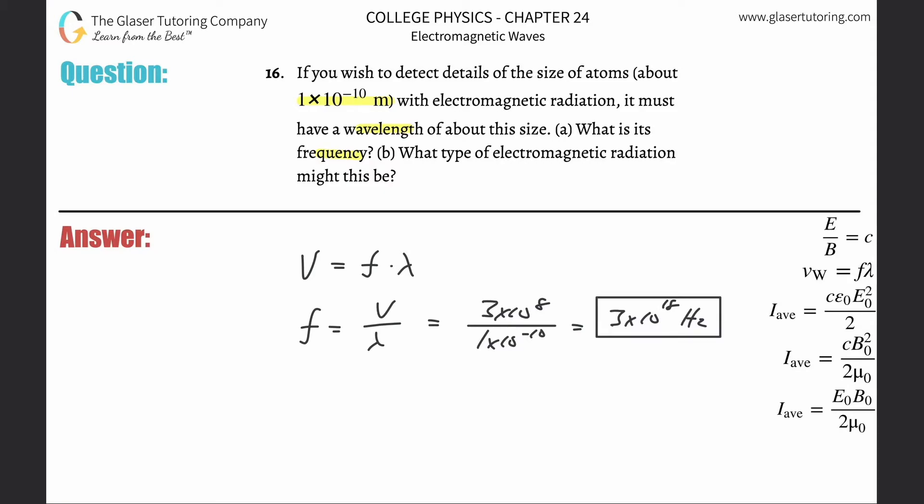Letter B is asking what type of electromagnetic radiation is this. You just have to look that up on a table on your electromagnetic spectrum, and that will be a type of X-ray. It'll fall into that category.